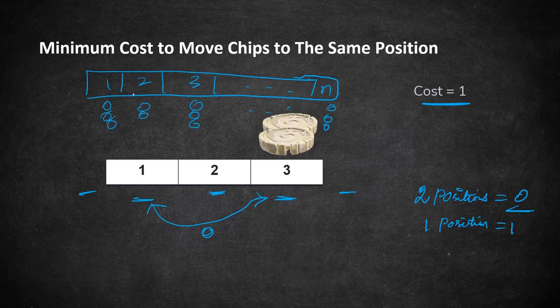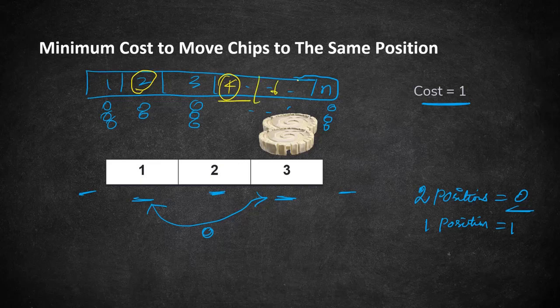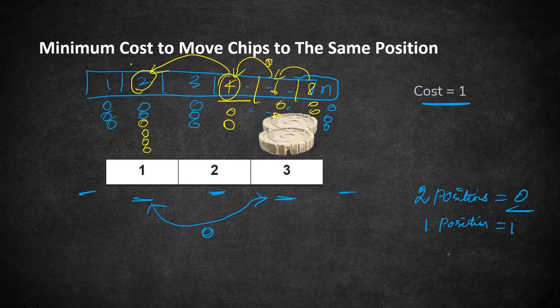So now we are trying to move all even position values to one particular position. Let's say we are going to move all 4, 6, 8 position coins to 2. So we first move 8 to 6 and then 6 to 4 and then 4 to 2. So all this transformation would require only zero cost because we are moving everything by two positions. So now we have all the coins at even positions at number 2.